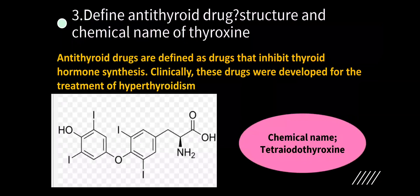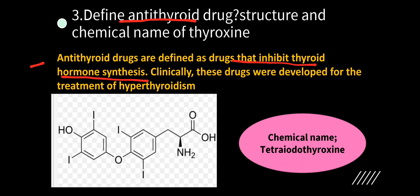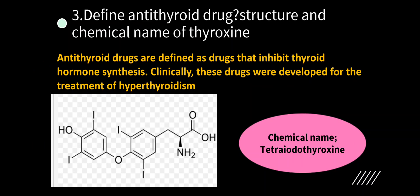Next: define antithyroid drug, structure and chemical name of thyroxine. Antithyroid drugs are defined as drugs that inhibit thyroid hormone synthesis. If excessive thyroid hormone is synthesized, it leads to thyroid problems. To inhibit the excessive synthesis, we give antithyroid drugs. Clinically, these drugs were developed for the treatment of hyperthyroidism. The structure shown is thyroxine, and the chemical name is tetraiodothyronine.